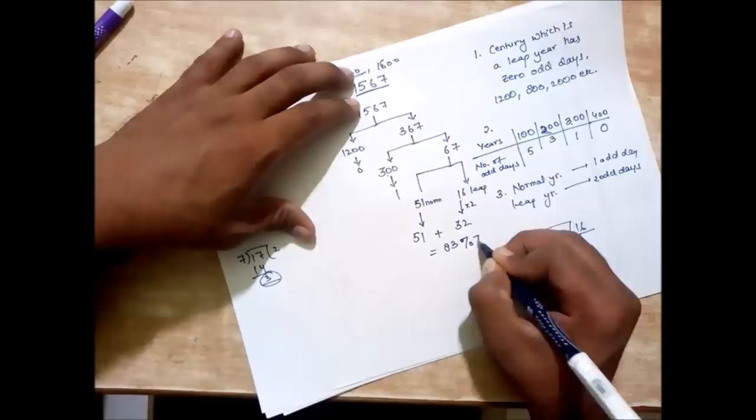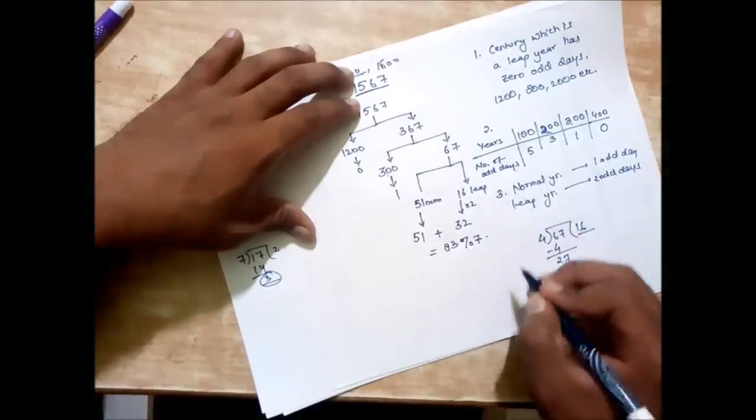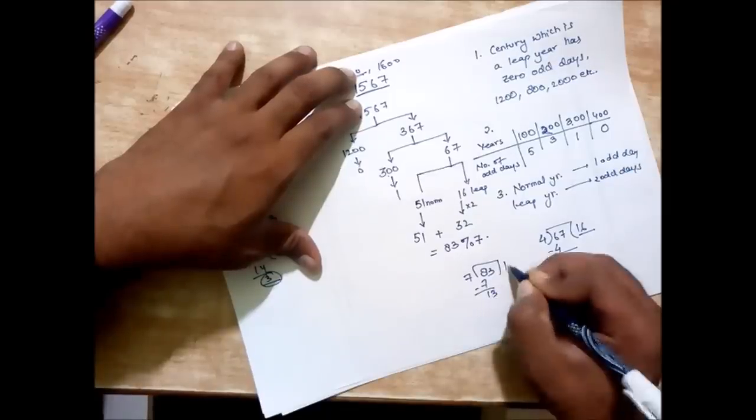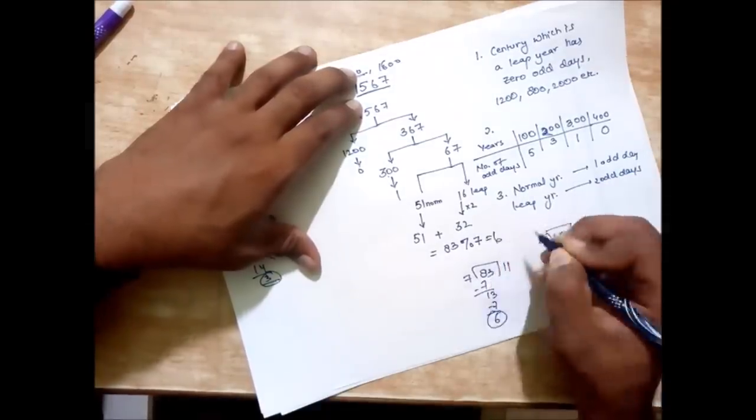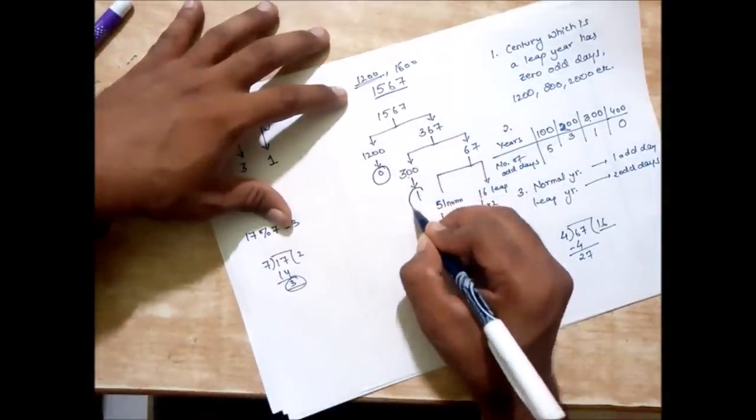Now we need to find how many odd days are there, so we again do the modulo with 7. Let's do it: 7 times 11 is 77, so this comes out to be 6.